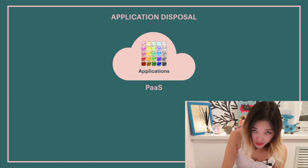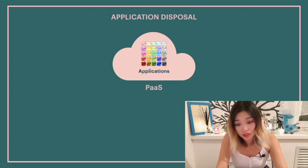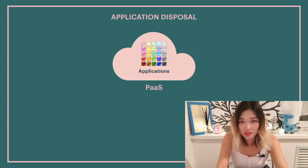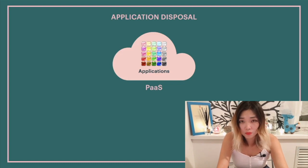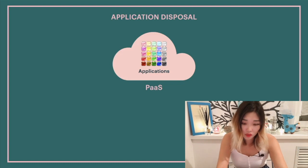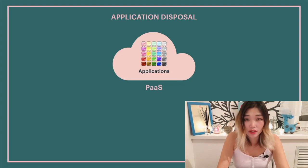There is also a risk of application disposal, similar to data disposal. When using a platform as a service model, there is a risk that upon contract termination, a CSP will not properly dispose of application data, which may include the applications themselves, backups, source code, or object code. If not properly disposed, such data may be unintentionally disclosed, creating an opportunity for an application attack, or they may be copied, violating the company's intellectual property rights. To reduce this risk, the contract should require proper disposal of applications, including objects, source code, and backup destruction. For intellectual property, it is good to include a non-compete clause in the contract.